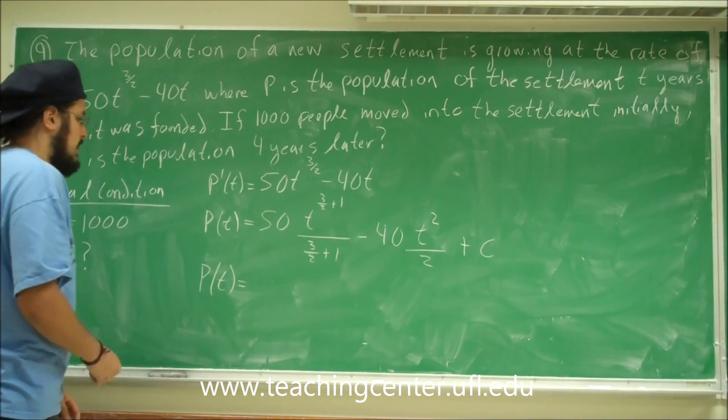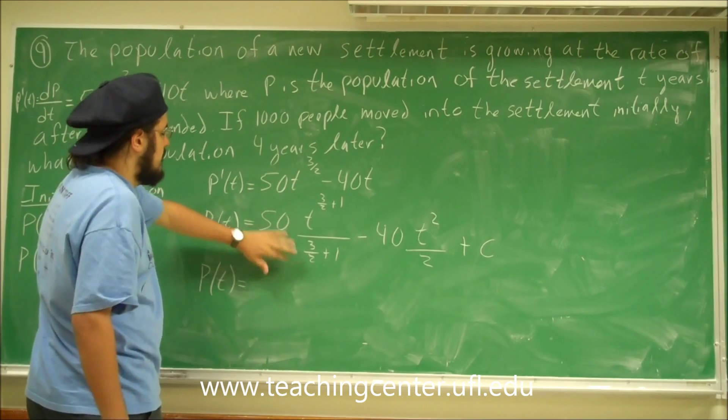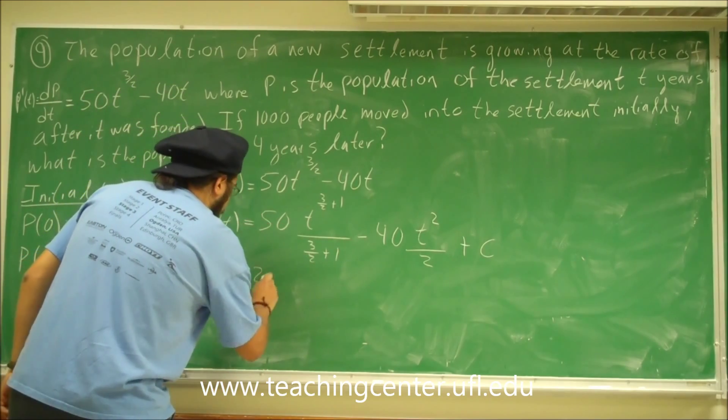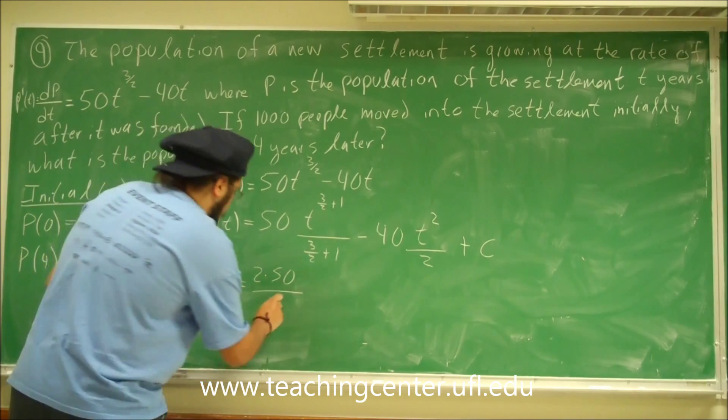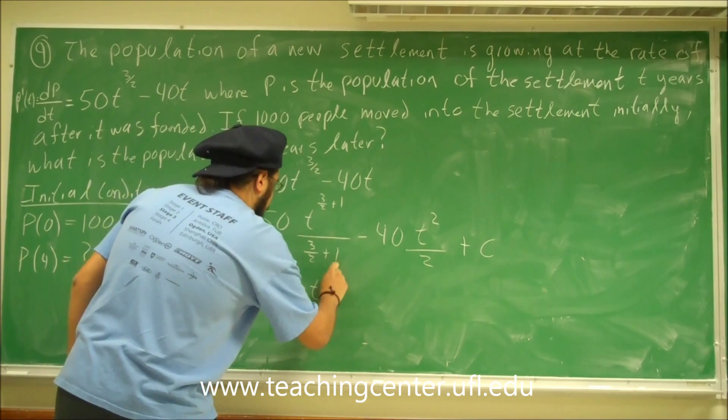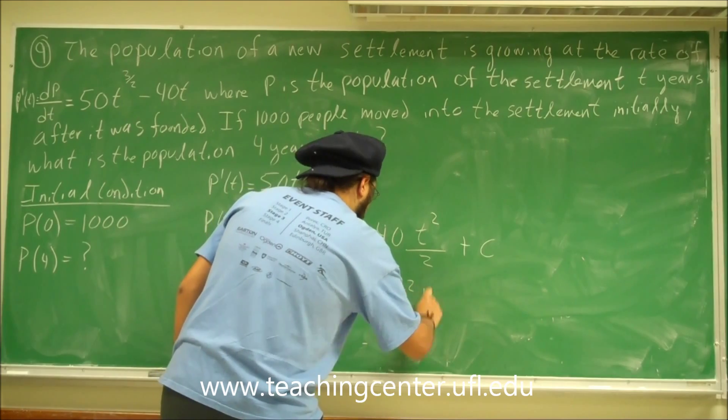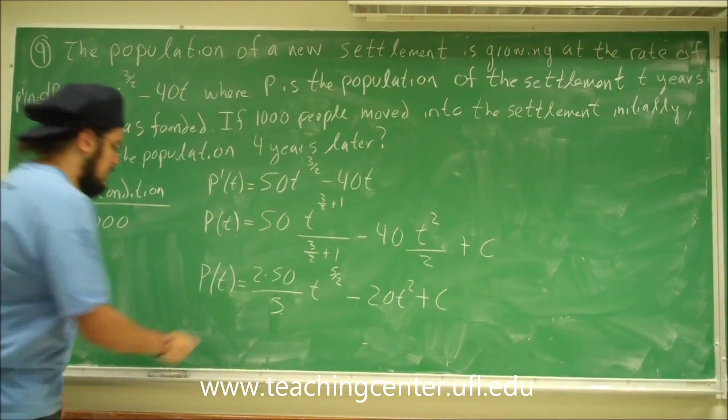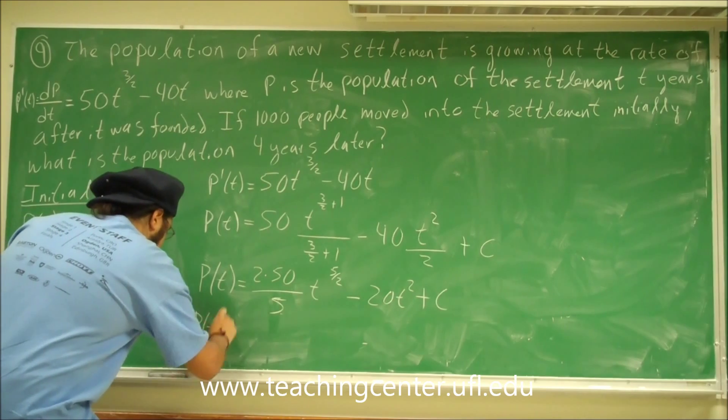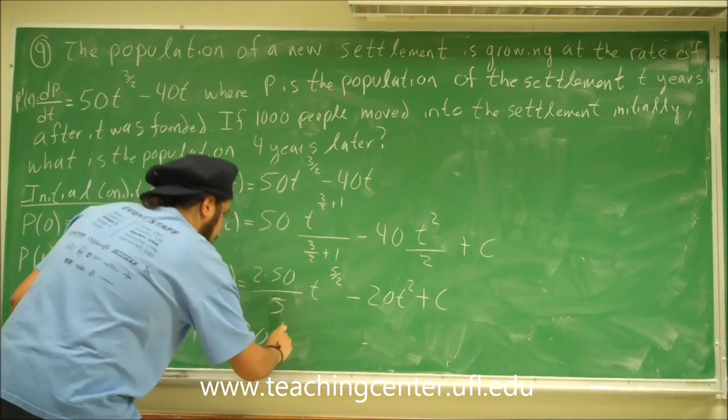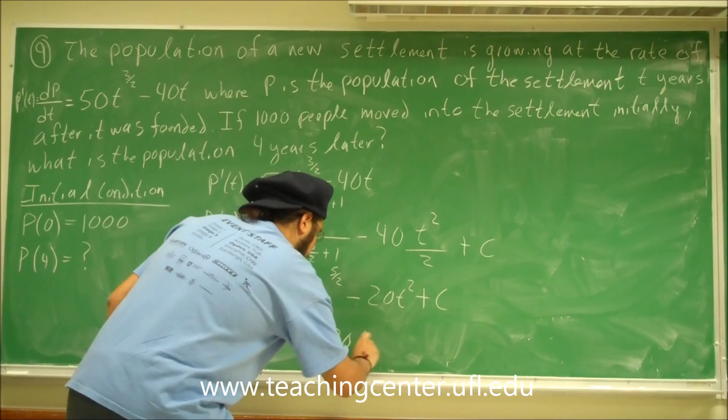Let's go ahead and simplify this. This is 5 halves. So if we have 5 halves down here, go ahead and multiply the 2 here and the 5 down there. So it's going to be 2 times 50 divided by 5 down here. And we have t to the 5 halves minus, 40 divided by 2 is 20, so this is 20t squared plus c. Let's do a little bit more simplifying. Go ahead and cancel out the 5. So we're left with 2 times 10, that's 20. So then p(t) is equal to 20t to the 5 halves minus 20t squared plus c.